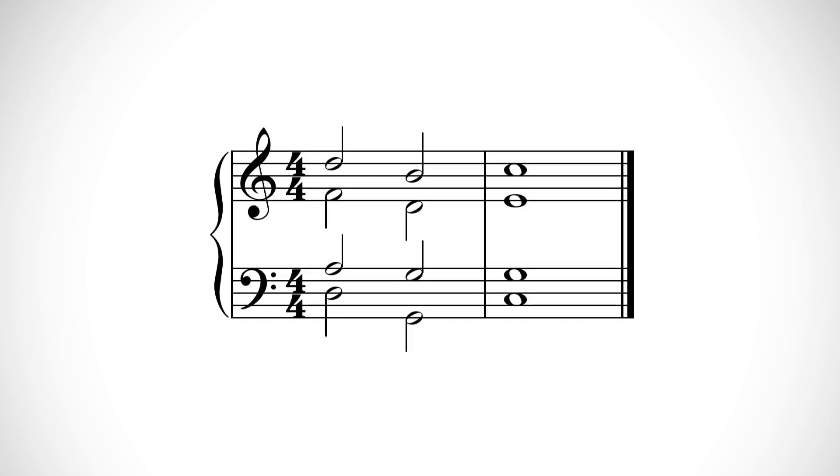A perfect cadence is the most common thing to hear at the end of a piece or large section. It is a V chord followed by a I chord, both usually in root position. The last two chords of this example show a perfect cadence in C major.